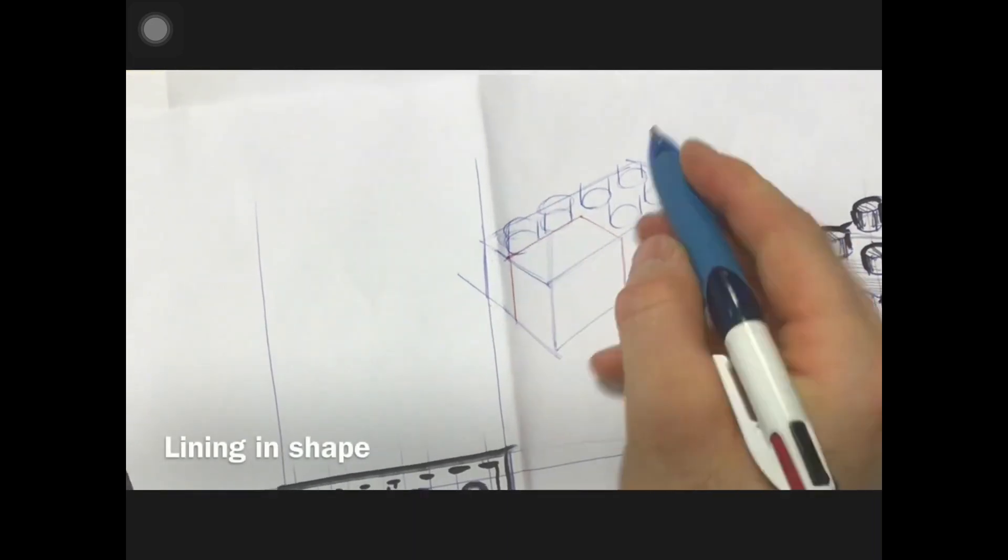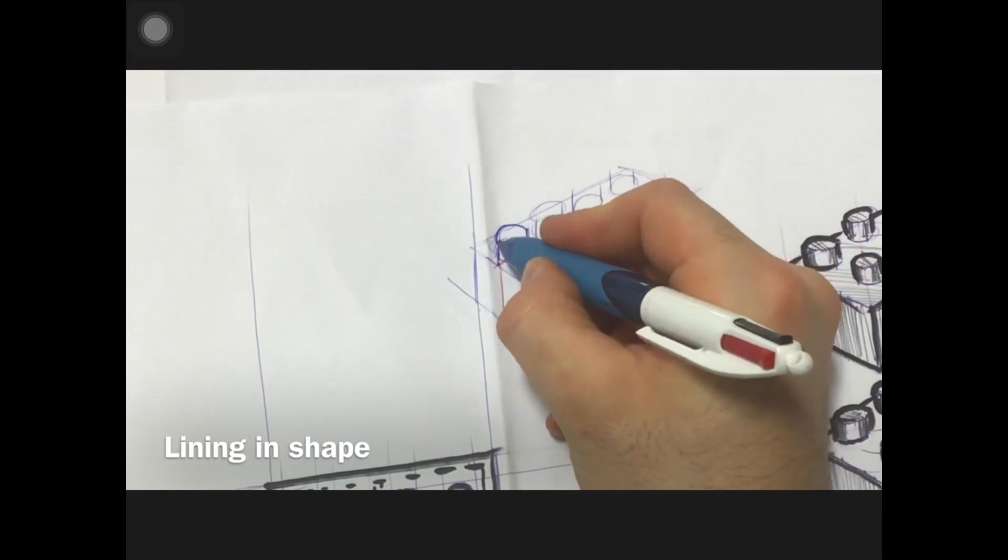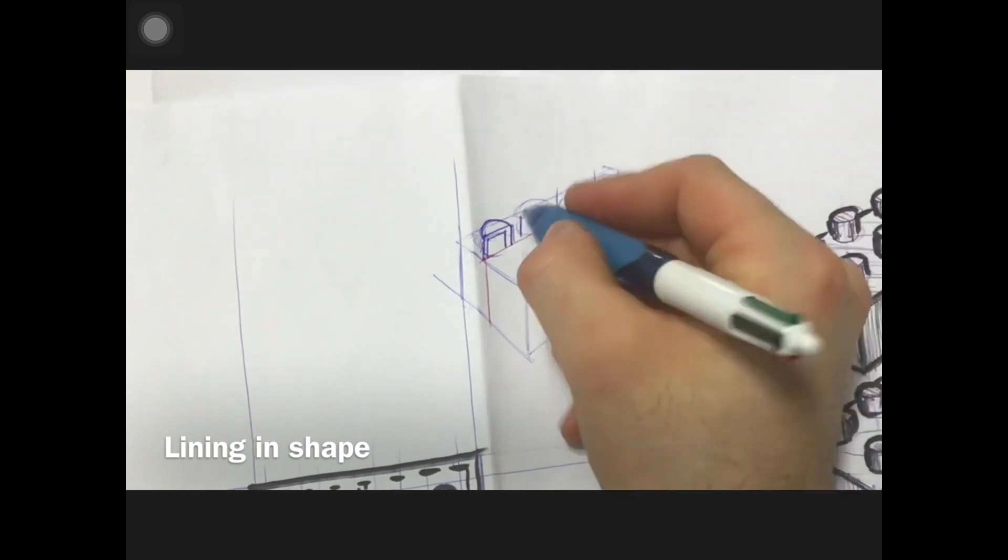With the basic shape of the object done, I can do a little bit of outlining. I see I made a little mistake with the proportion of the studs and the length of the brick - that's preliminary sketching, won't make mistakes, and it can be tidied up with the outlining.